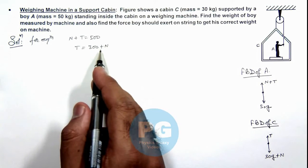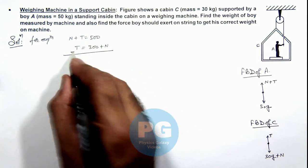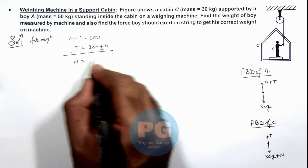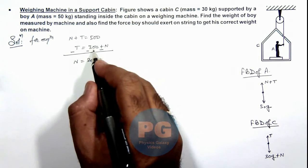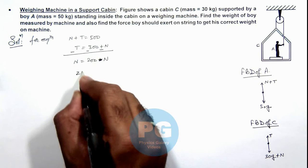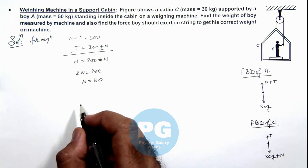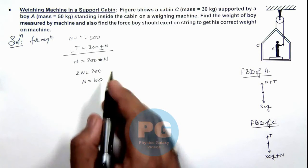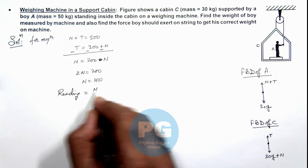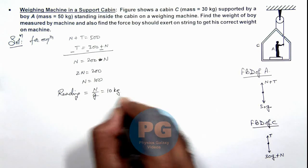Here we are required to find the normal reaction which is read by the weighing machine in kilogram weight. We can subtract these equations so that the value of T gets cancelled out. We are getting 2N equals 200, so the value of N is 100 newton. The reading of the weighing machine would be given by N/g as it reads in kilogram weight. So it is 100/10, that is 10 kg, which is one result of this problem.